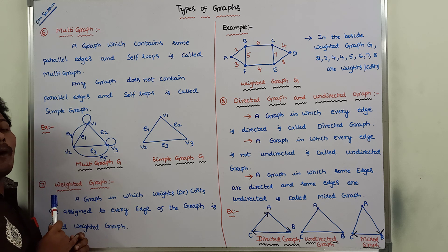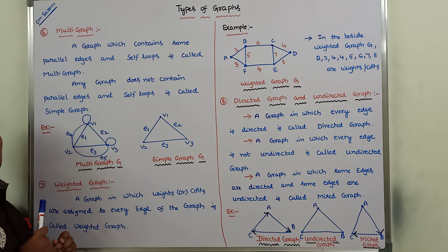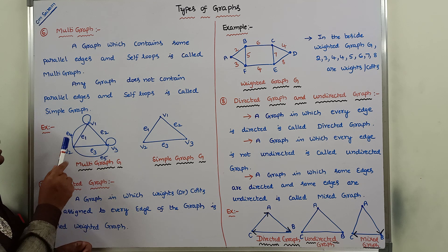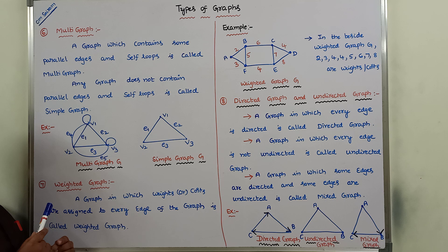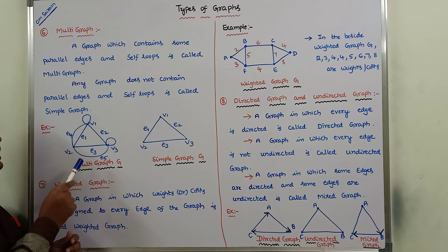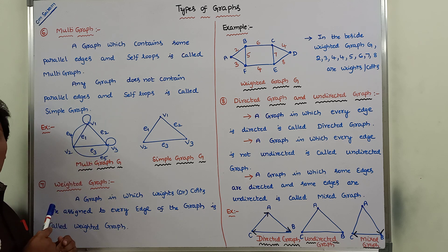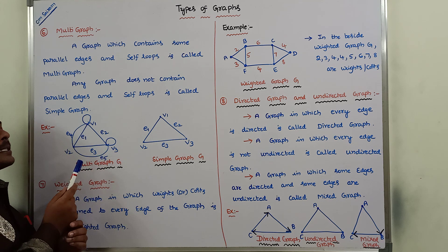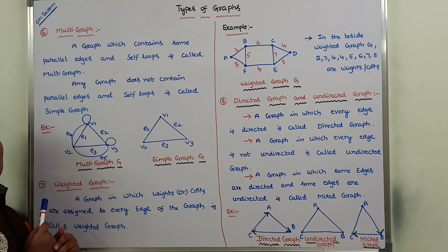E1 and E4 are called as parallel edges. That means, in a graph, two vertices are connected by using two edges, then those two edges are called as parallel edges. So E1 and E4 are parallel edges because V1 and V2 are connected by both. Similarly, E3 and E5 are called as parallel edges because they connect vertices V2 and V3.